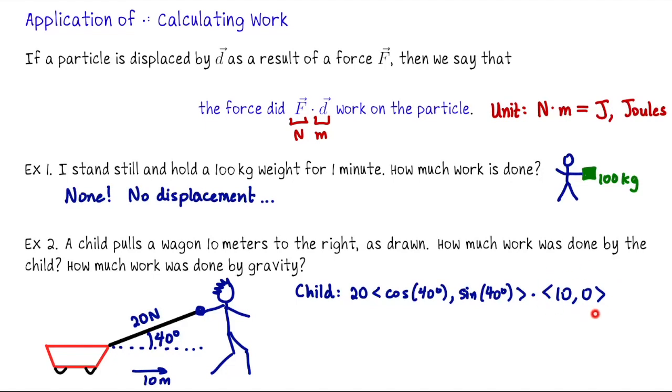The wagon doesn't go up or down, it goes ten units to the right. So the displacement vector is ten, zero. We take that dot product and it's a scalar. It's just going to be two hundred times cosine of forty degrees, or about one hundred and fifty-three point two joules. That's how much work the child did.